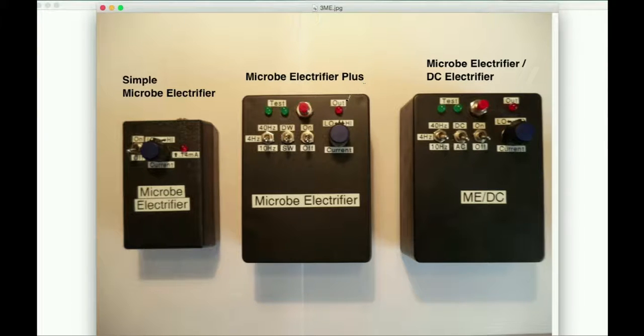The Microbe Electrifier Plus has the option of a damped wave as well as the original square wave output. Pressing this test button you get to see the action of the alternating output which alternately lights these two green lights. The output light comes on when you're getting the minimal amount of current needed to do the job. And you have the current control here, and you have the frequency switch here. In the middle position it's 4 Hz, bottom position is 10 Hz, top position is 40 Hz.